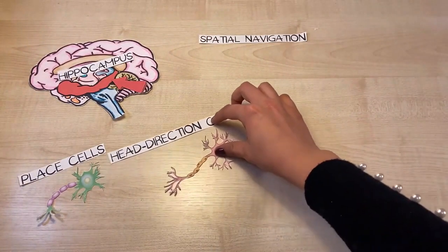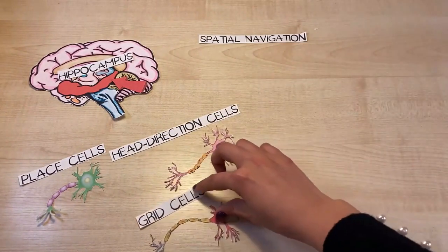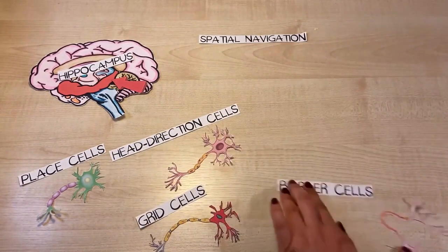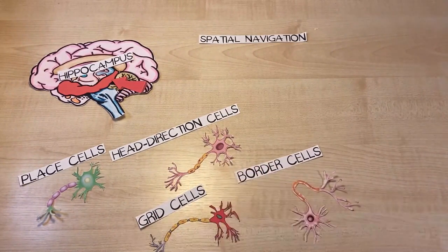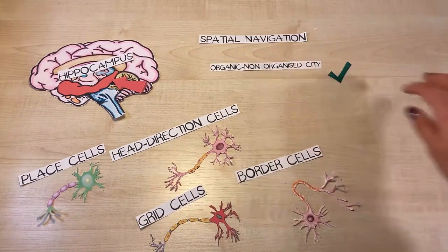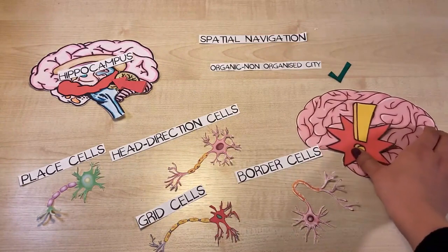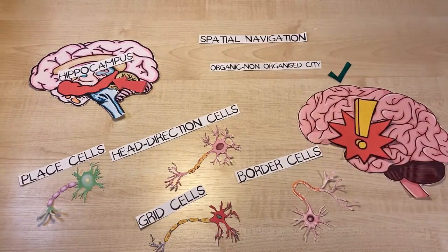So, now that you know how spatial navigation works and how your environment impacts this process in your brain, next time you want to remember somewhere, try to repeat the process of going there in your mind so your neurons can reinforce this learning.